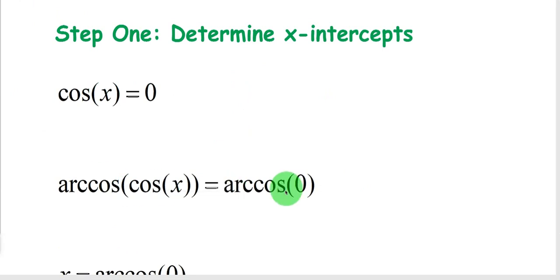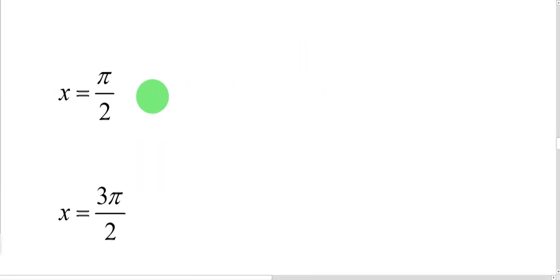In order to do that, you'll take arc cosine of both sides. So you're basically figuring where on the unit circle does x or cosine equal 0. That's going to be at π/2. That point is (0, 1) on the unit circle, and at 3π/2 at (0, -1).